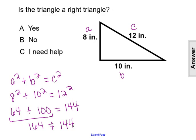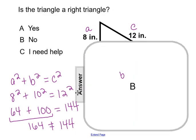So a squared plus b squared does not equal c squared. This is not a right triangle, making our answer B: No.